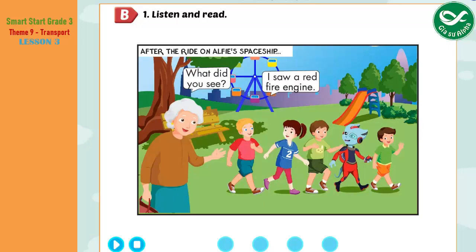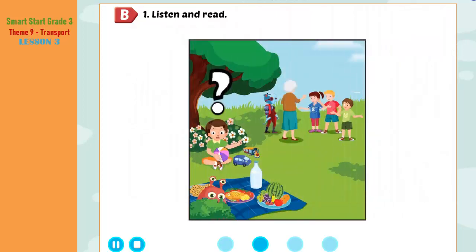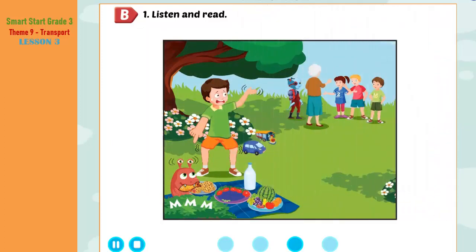B. One. Listen and read. After the ride on Alfie's spaceship. Hi, Grandma! Hi, Ben! We went on Alfie's spaceship! Wow! What did you see, Tom? I saw a red fire engine. What did you see, Lucy? I saw a blue police car. And what did you see, Nick? I saw a white ambulance. What did you see, Alfie? I saw a yellow bus!